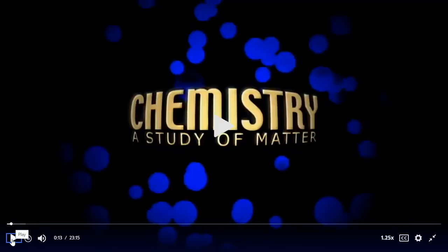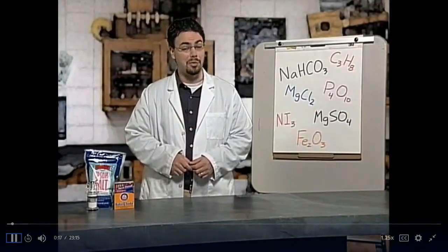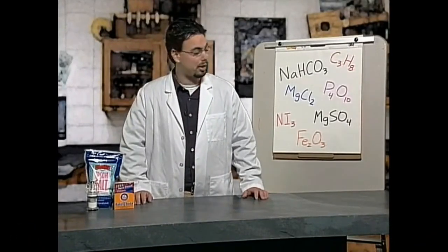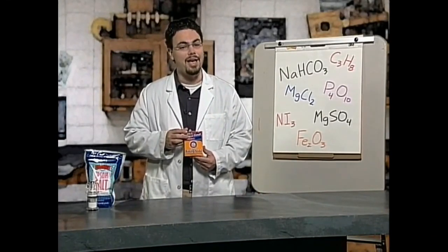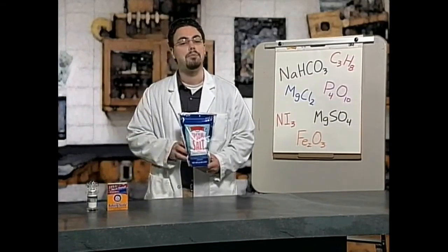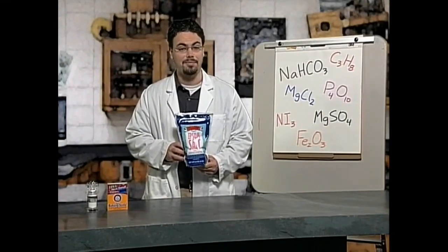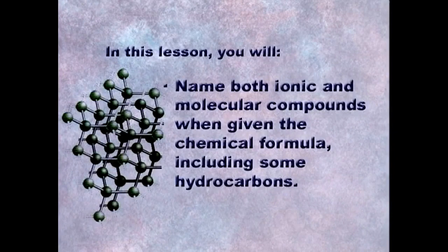Now that we've figured out how to write formulas, we're going to figure out how to go from formulas to names — which is personally much easier for ionic compounds. You'll read formulas in order to know how to name compounds. For instance, how do we know that NaHCO₃ is sodium bicarbonate, and that MgSO₄ is magnesium sulfate?